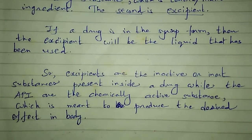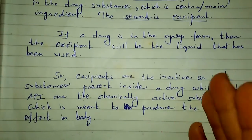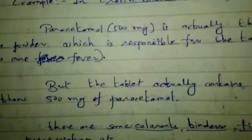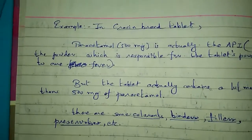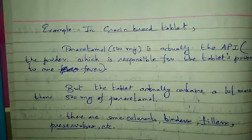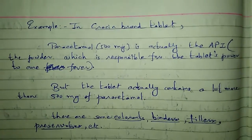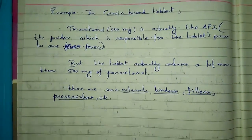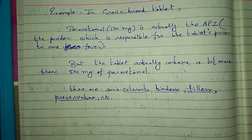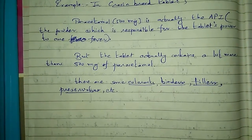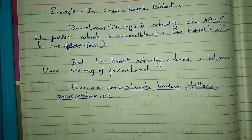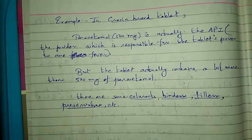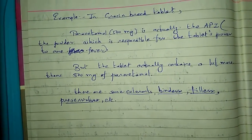To understand this better: Crocin is a well-known brand, and paracetamol is the active part of that tablet. The 500mg of paracetamol is the API — it is the powder which is responsible for curing fever.